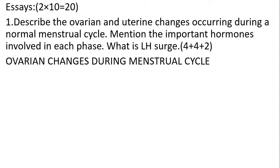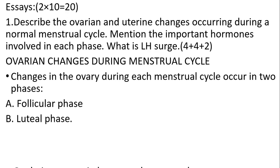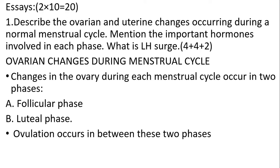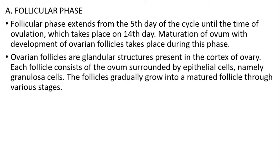Ovarian changes during the menstrual cycle occur in two phases. The first is the follicular phase and the second one is the luteal phase. Ovulation occurs in between these two phases. The follicular phase extends from the fifth day of the cycle until the time of ovulation, which takes place on the 14th day. Maturation of ovum with development of ovarian follicle takes place during this phase. Ovarian follicles are granular structures present on the cortex of the ovary. Each follicle consists of an ovum surrounded by epithelial cells, namely granulosa cells. The follicles gradually grow into a mature follicle through various stages.